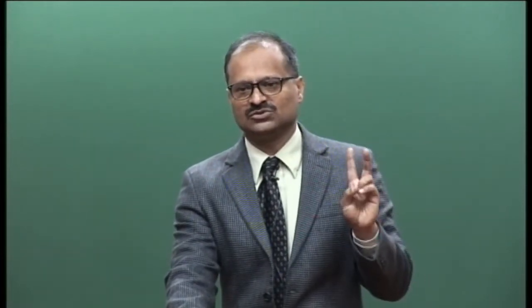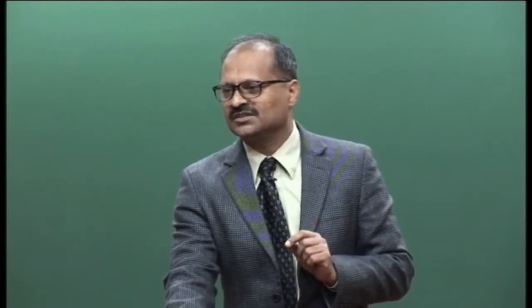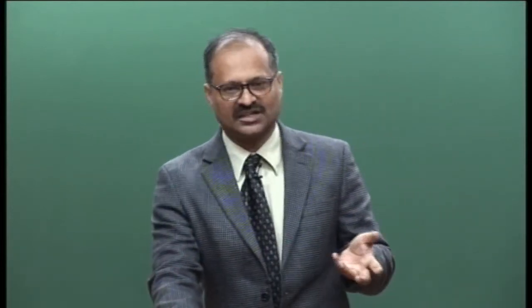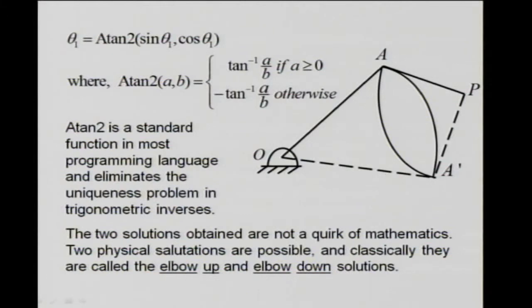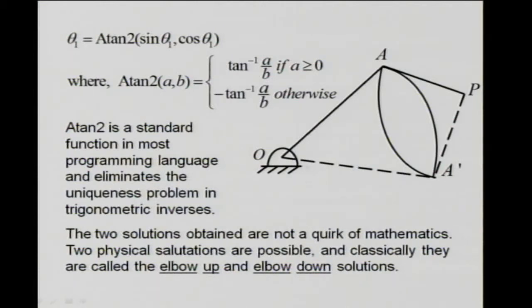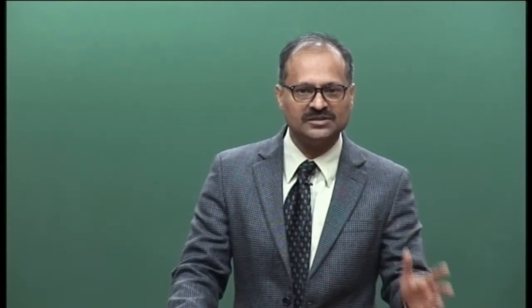We finally land up with two solutions, and these are not mathematical artifacts from squaring — these two solutions are physically real. One is the elbow-up solution and the other is the elbow-down solution, which you should know from kinematics. If instead you had used one equation to evaluate theta1, you would land up with four solutions, but four solutions do not actually exist for this problem. One must be aware of the number of physical solutions and eliminate all spurious ones — that is the challenge.